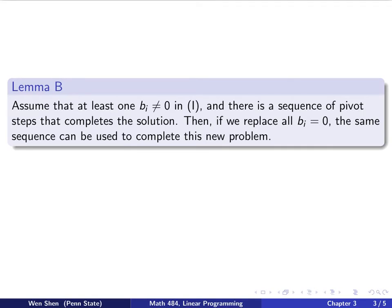Let's take a look at the second lemma, lemma B. Assume that if at least one bi is not zero in problem one, then there is a sequence of a pivoting step that will complete the solution. So that is the assumption. You have some bi which is not zero, and you have found a sequence of pivoting steps that will complete the solution. Then, if we replace all the bi with zero, so we set the right-hand side of the constraint, replace all by zero, then the same sequence can be used to complete this new problem.